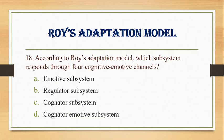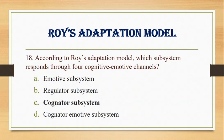Number 18. According to Roy's adaptation model, which subsystem responds through the four cognitive emotive channels? A. Emotive subsystem, B. Regulator subsystem, C. Cognator subsystem, D. Cognator emotive subsystem. Answer: C. Cognator subsystem.